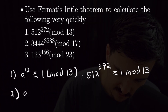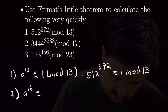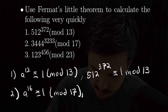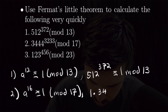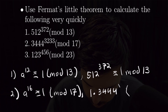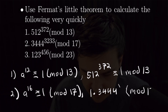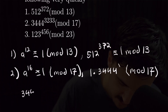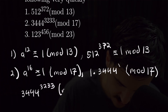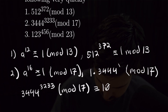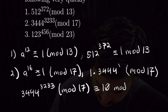For number 2, we know that a to the 16th power is congruent to 1 mod 17. We can see that 32 is divisible by 16, which means we can write this as 1 times 3,444 to the first power mod 17. All we need to do is reduce 3,444, and that is congruent to 10. So we have that 3,444 to the 3233 mod 17 is congruent to 10 mod 17.